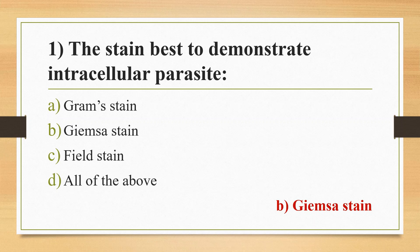Gram stain is a differential stain used to differentiate bacteria from a mixture of organisms into gram positive and gram negative. Field stain is used for rapid processing of specimens and is used for staining of thick blood film.